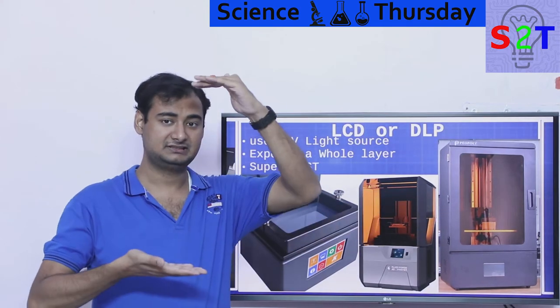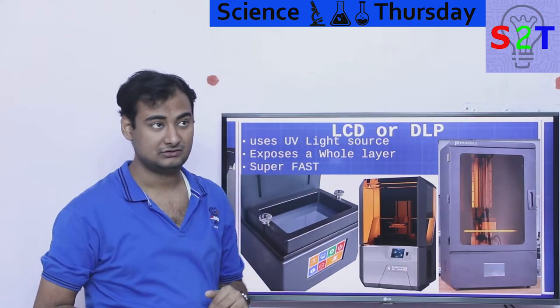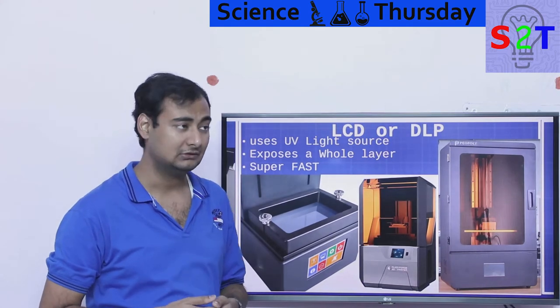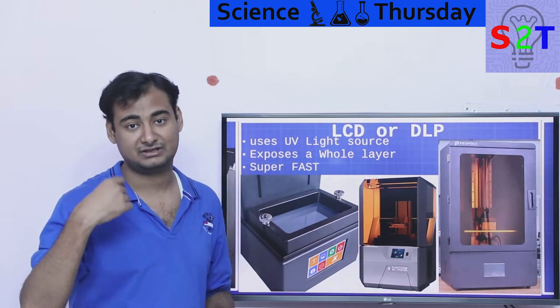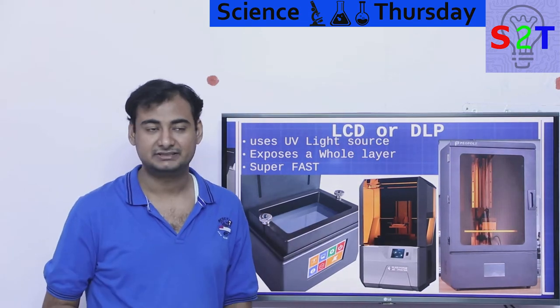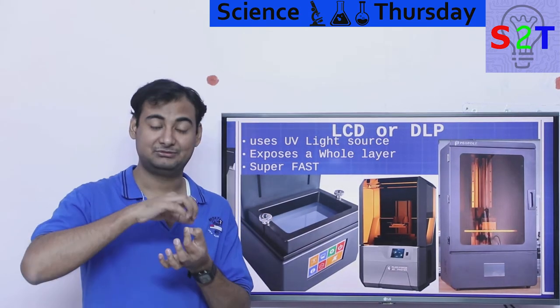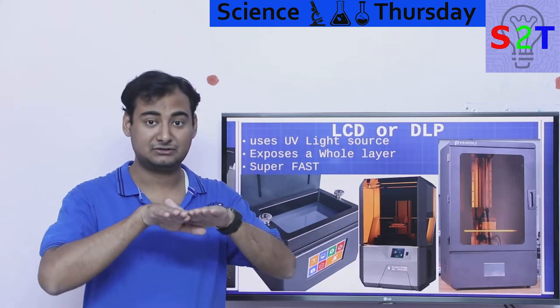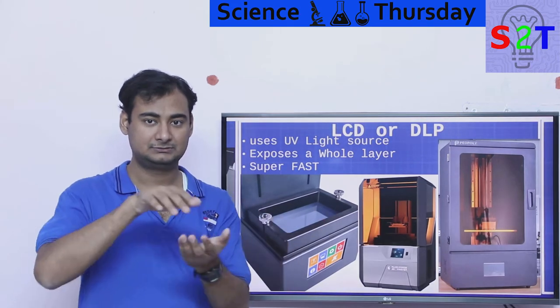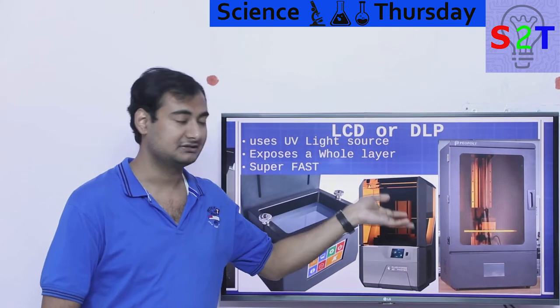Now you might be like, okay that isn't that kind of slow? Well yes, but for the resolution it can achieve. Because if you have to achieve that resolution in your filament system, first you can't, second even if you try to do that it will be very slow. So given the resolution and the size and the speed, it's amazingly fast because it's exposing the whole layer one by one. It's like pull it up and again.